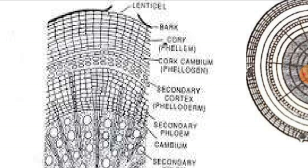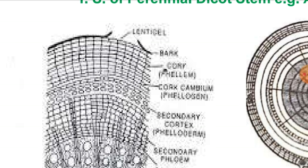The secondary phloem and the primary cortex undergo secondary growth to form the secondary cortex. The phellogen (cork cambium) produces cork on the outer side and phelloderm (secondary cortex) on the inner side. Together — cork, cork cambium, and secondary cortex — these form the periderm. The gaseous exchange occurs through lenticels. Dead cells accumulate toward the outer side of the periderm, forming a thick coating known as bark.